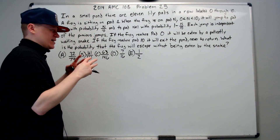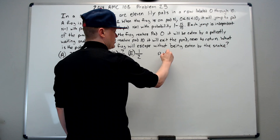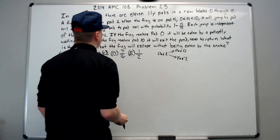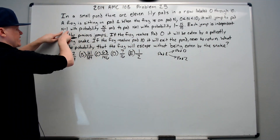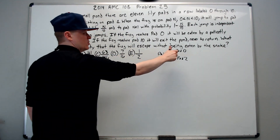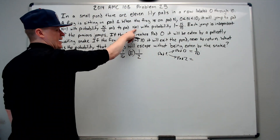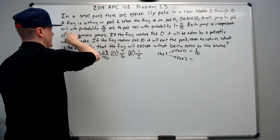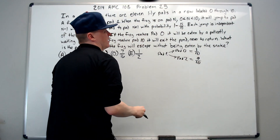Let's pause there because there are a lot of n's going on. What are they saying? Well, if you're on pad 1, you can go to two places: pad 0 or pad 2. n minus 1, where n is 1, gives 0. So the chance he goes to pad 0 is n over 10, which is 1 tenth. And the chance he goes to pad 2 — pad n plus 1 — with probability 1 minus 1 tenth is 9 tenths.